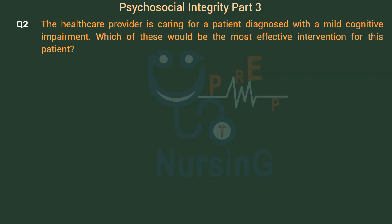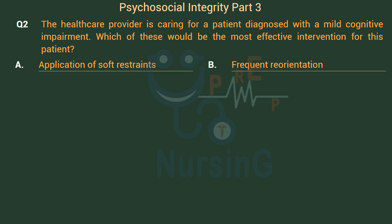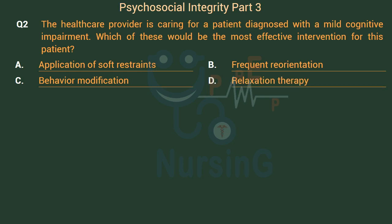The healthcare provider is caring for a patient diagnosed with mild cognitive impairment. Which of these would be the most effective intervention for this patient? Option A: Application of soft restraints. Option B: Frequent reorientation. Option C: Behavior modification. Option D: Relaxation therapy.